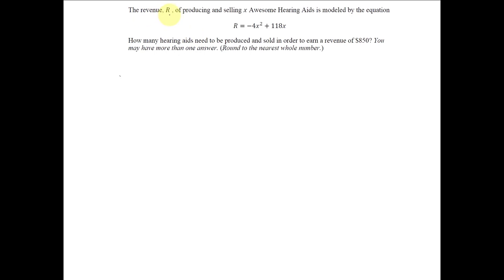The revenue R of producing and selling x awesome hearing aids is modeled by the equation R equals negative 4x squared plus 118x.